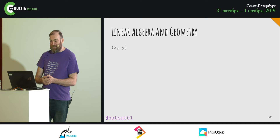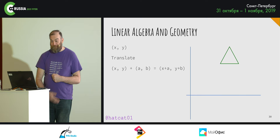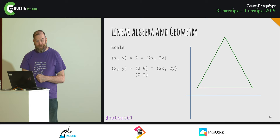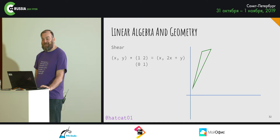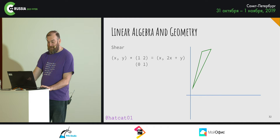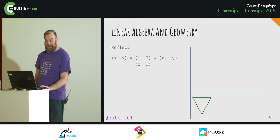Translation takes place by adding the translation to the coordinate pair. Scaling works by scalar multiplication, or we can achieve the same effect with a matrix multiplication. Shearing means scaling X and Y by different amounts. Reflecting means multiplying a particular ordinate by negative one. Rotating is a bit more complex, requiring a matrix multiplication.